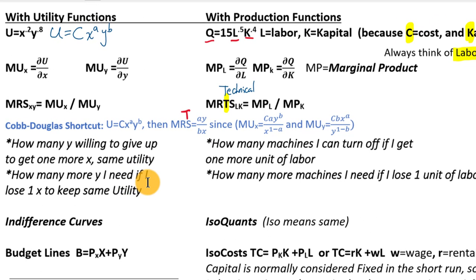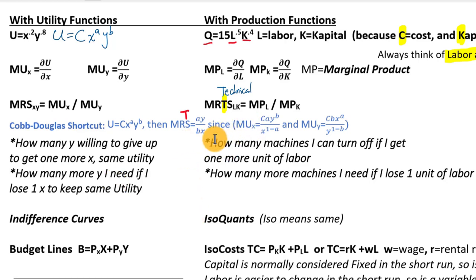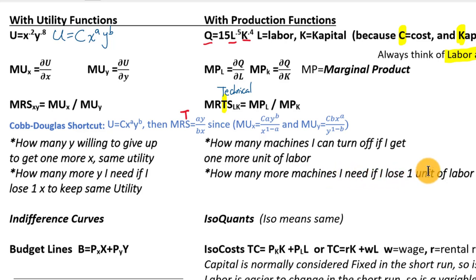In the utility context, MRS tells us how many Y we'd be willing to give up to get one more X while keeping the same utility. In the production context, MRTS tells us how many machines we could turn off if we get one more unit of labor — since labor is on the x-axis. Moving the other direction: if one worker doesn't show up, the MRTS tells us how many more machines we'd need to replace that lost worker.